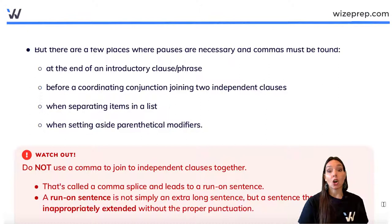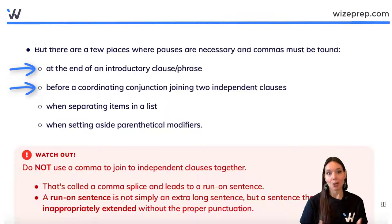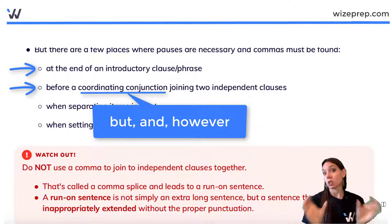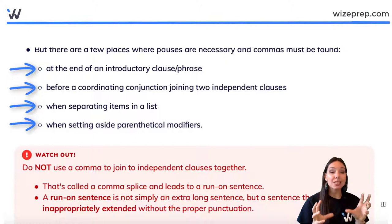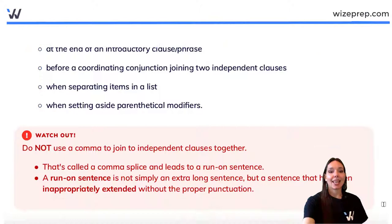These few places where commas are necessary include: at the end of an introductory phrase, before a coordinating conjunction joining two independent clauses — so a coordinating conjunction is 'but,' 'or,' 'and,' or 'however,' joining two independent clauses which can be sentences on their own — when separating items in a list, and when setting aside parenthetical modifiers. Those are the top rules where we don't have much wiggle room when it comes to comma usage.